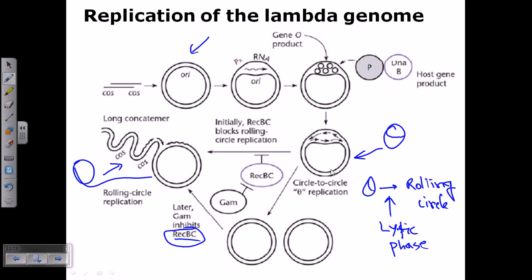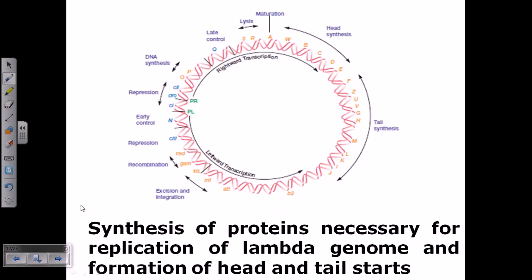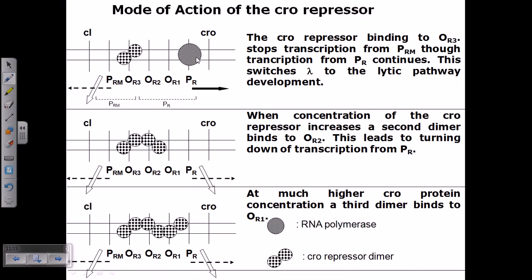expressing during this lytic phase, due to the binding of Cro—remember, due to the binding of Cro—it is enhancing the genes that are present in the right hand side to be expressed more. There is a gene called GAM that is present in this